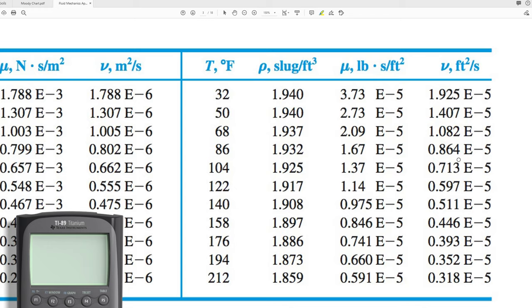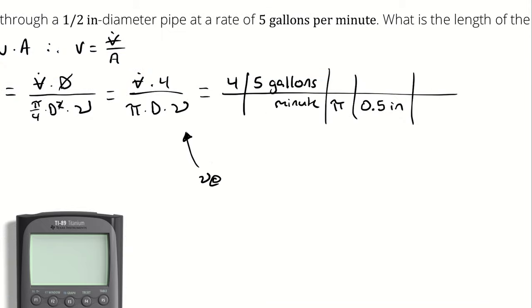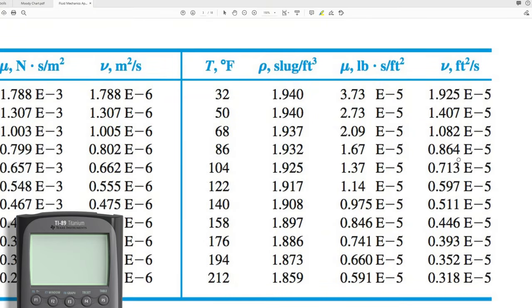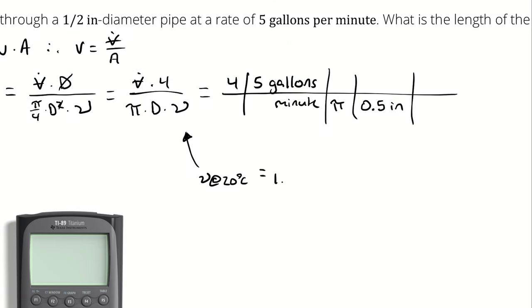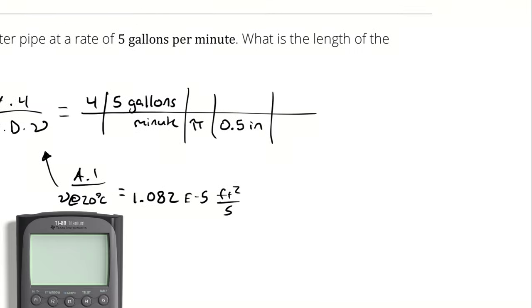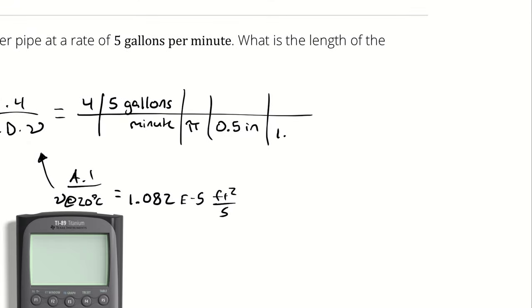But the kinematic viscosity for water at 20 degrees Celsius can be expressed as 1.082 times 10 to the negative 5th square feet per second. And that, again, came from table A1. So I will write 1.082 times 10 to the negative 5th square feet per second.